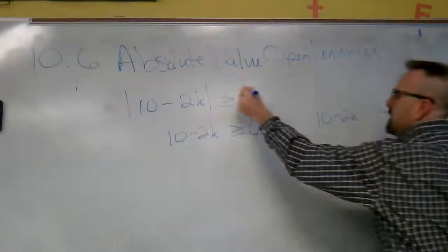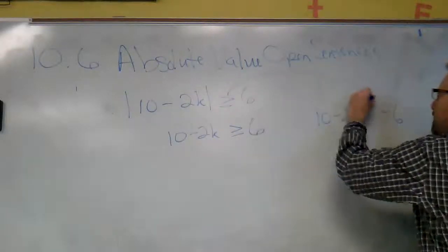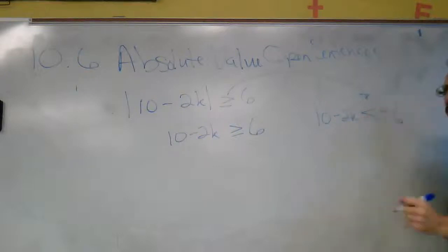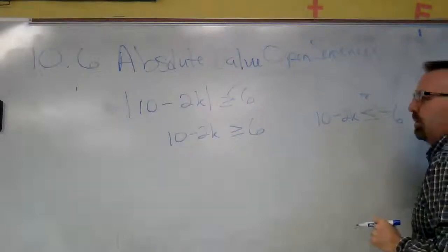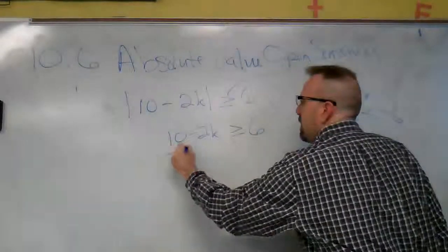For the negative, we make that the opposite, and because we basically divided by a negative, we have to flip the inequality sign. So remember: when you change it to the negative, flip your inequality sign the opposite way. Subtract 10.